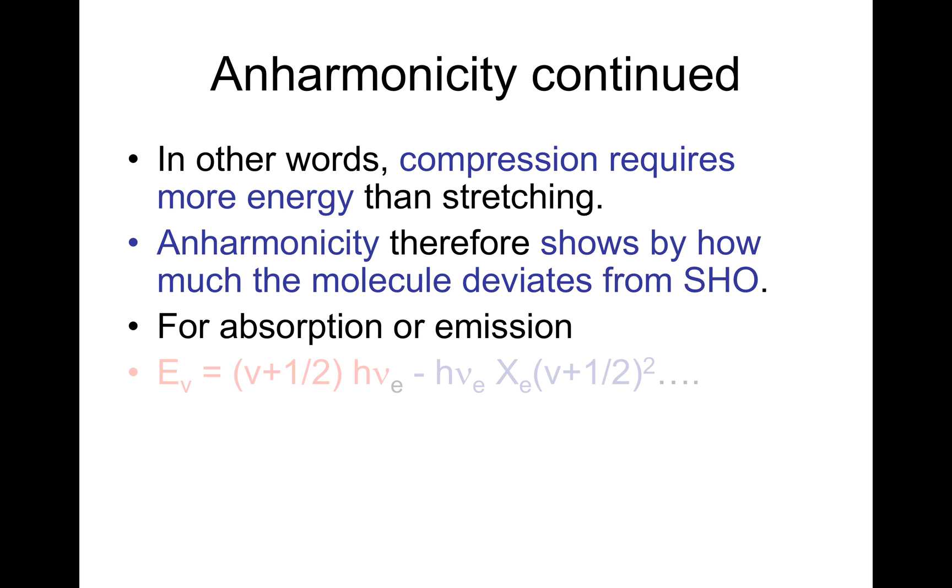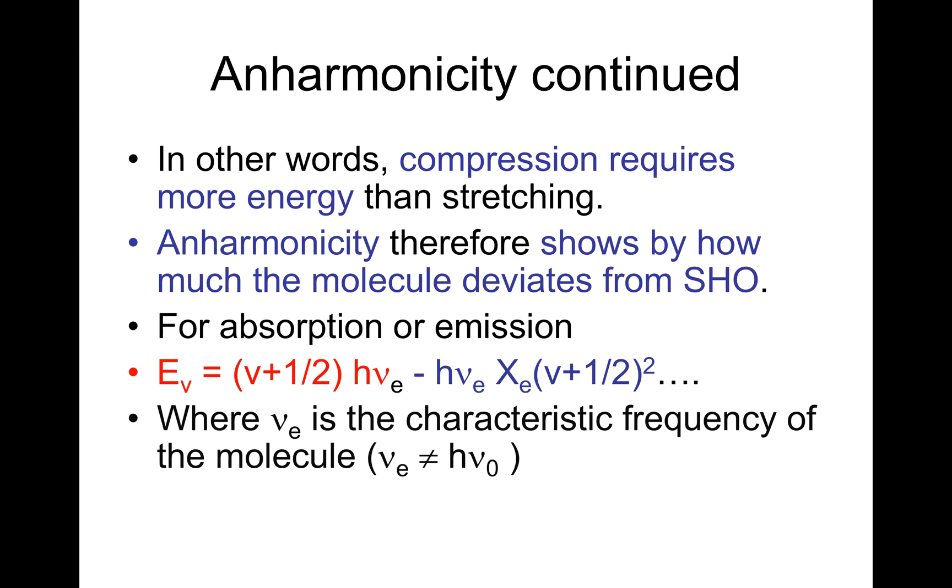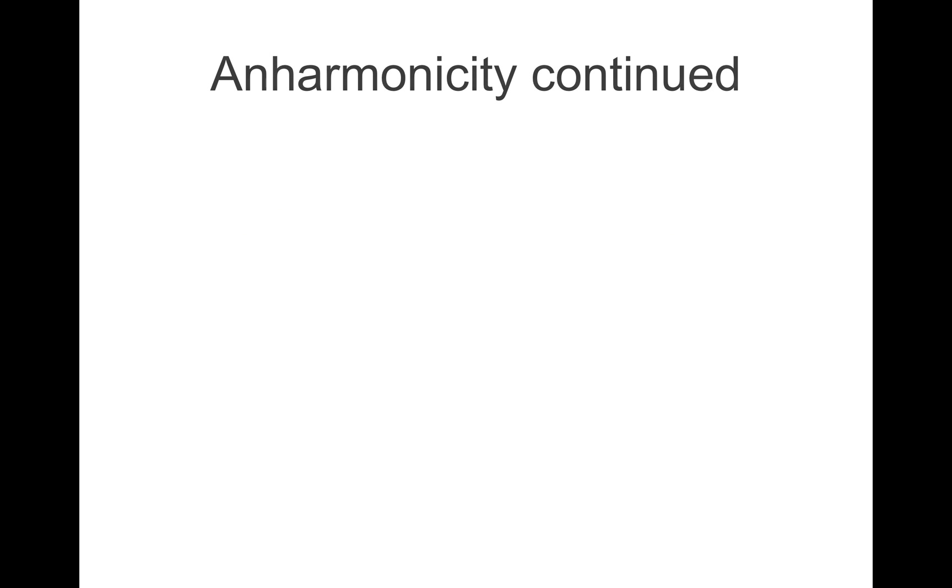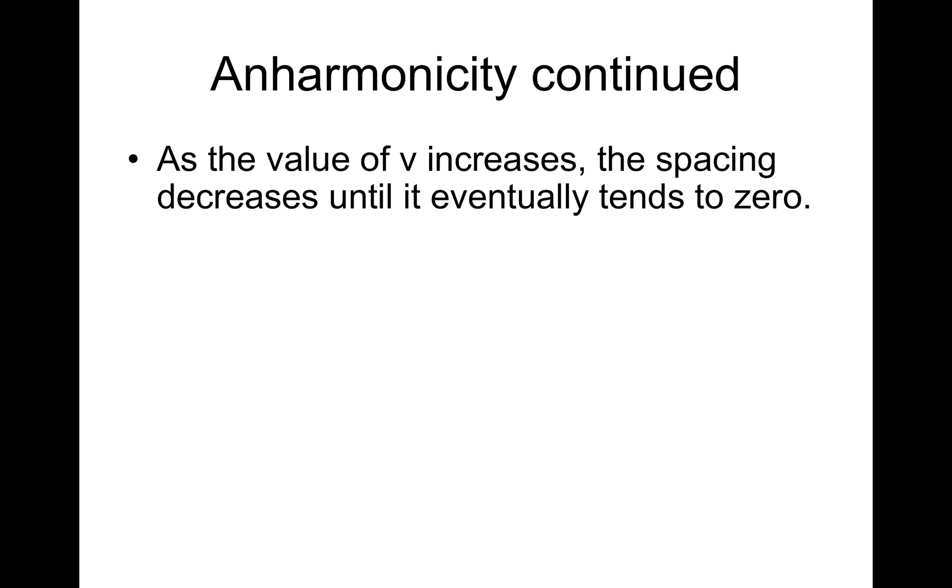For absorption or emission, Ev is equal to v plus a half into h nu e, minus h nu e x e v plus a half squared. Where nu e is the characteristic frequency of the molecule, and please nu e is not equal to h nu naught. X e is the anharmonistic constant, which is a measure of the deviation of the real oscillator from the simple harmonic oscillator.